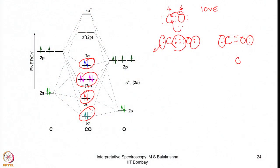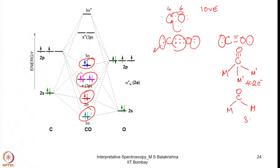When CO bridges two metal centers, it does not act as a four-electron donor like halides. Instead, it forms a four-centered two-electron bond (for two metals) or a three-centered two-electron bond (for three metals). The electrons are shared between the metals. We will consider what happens to the CO stretching frequency when CO acts as a terminal, bridging, or tri-bridging ligand.